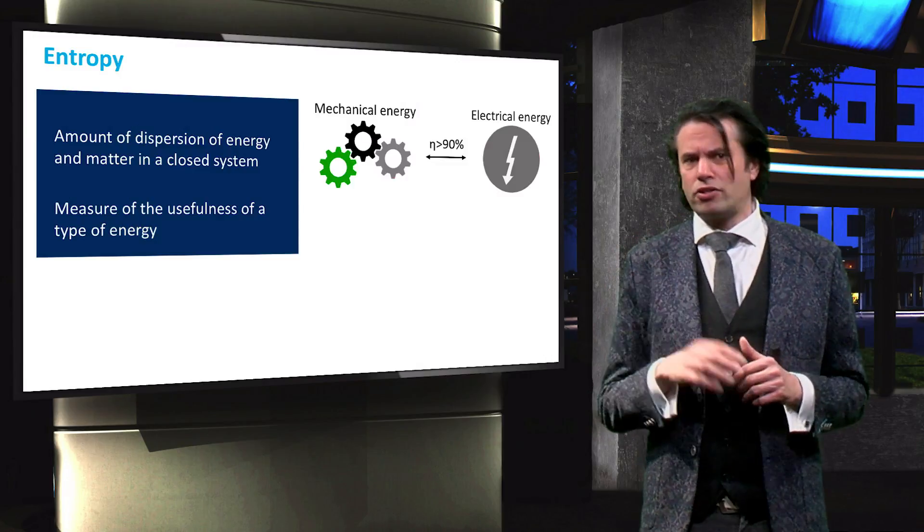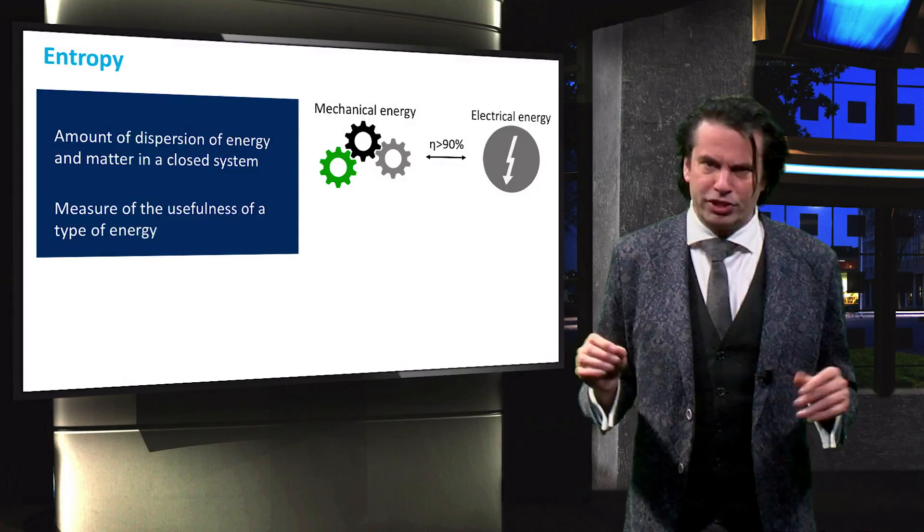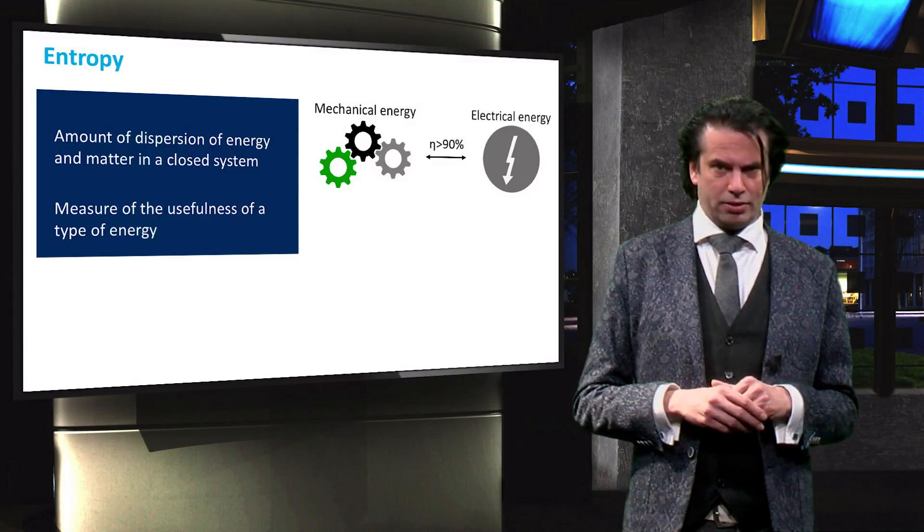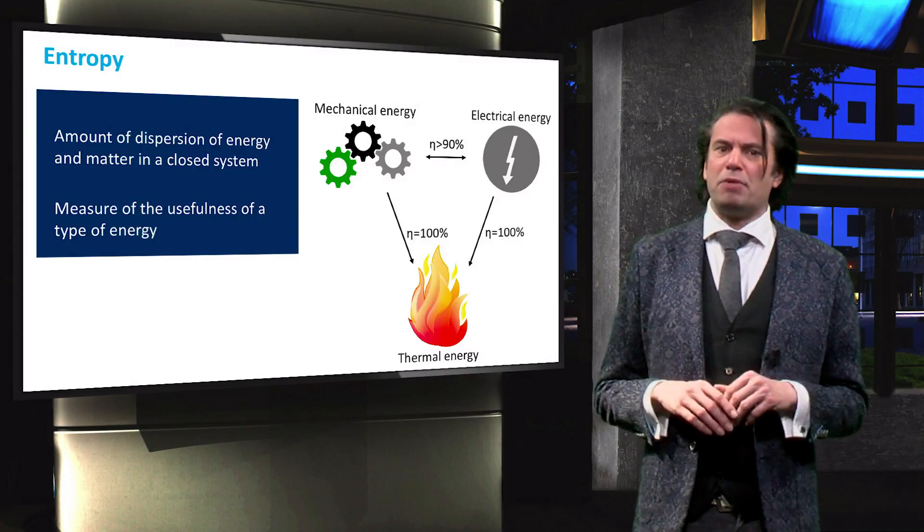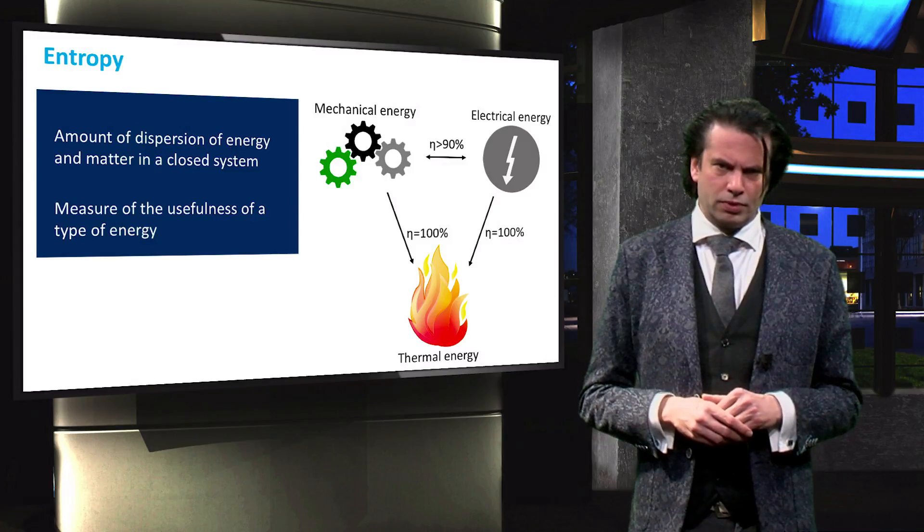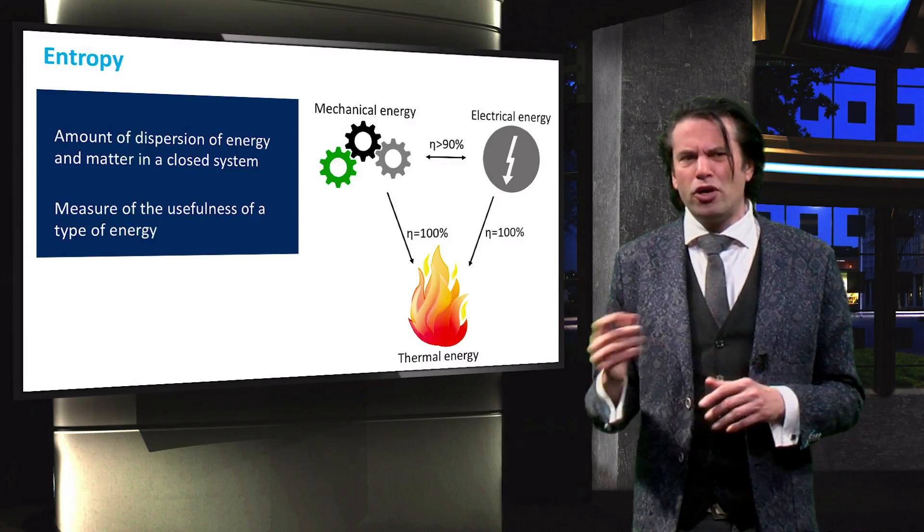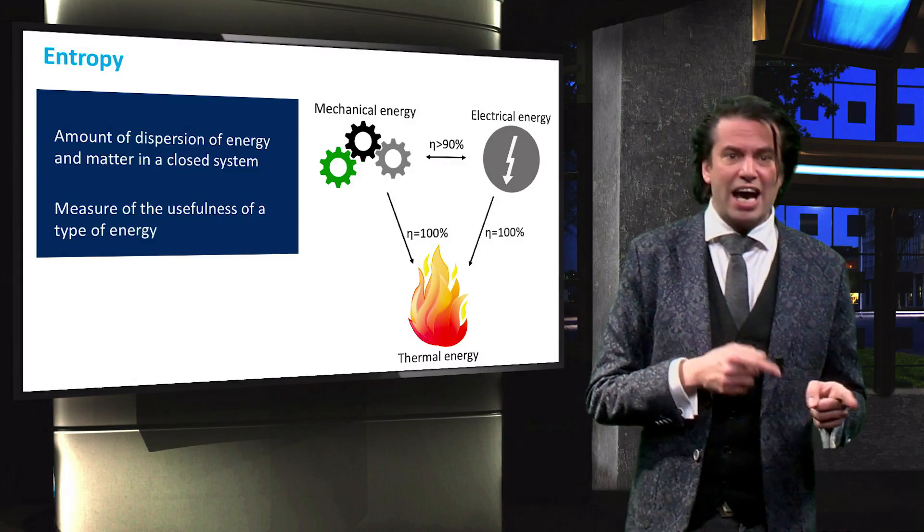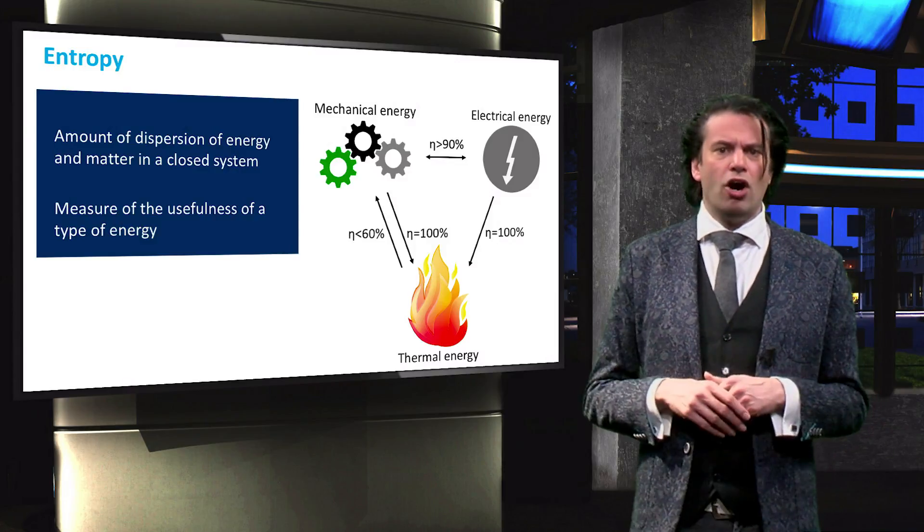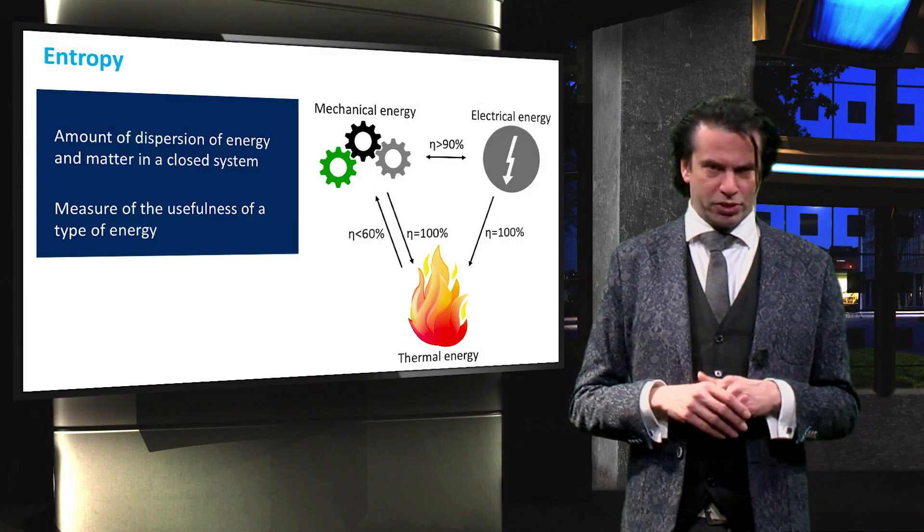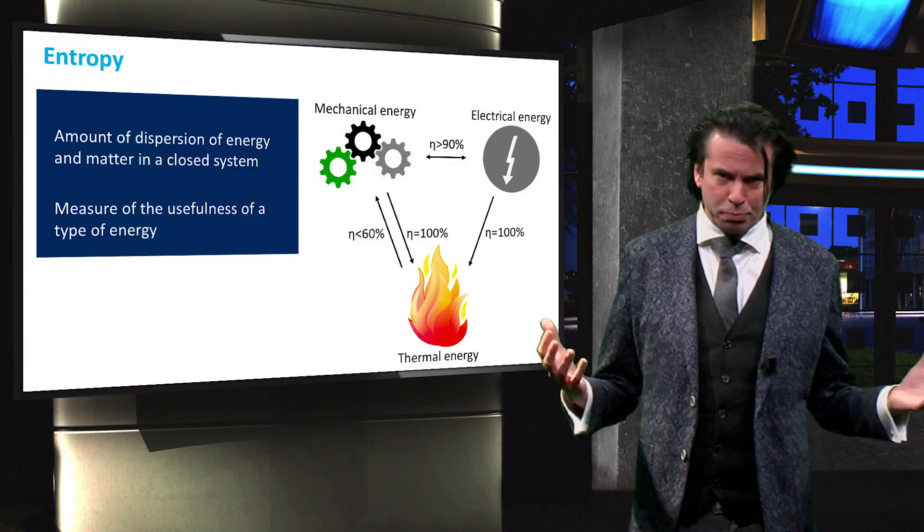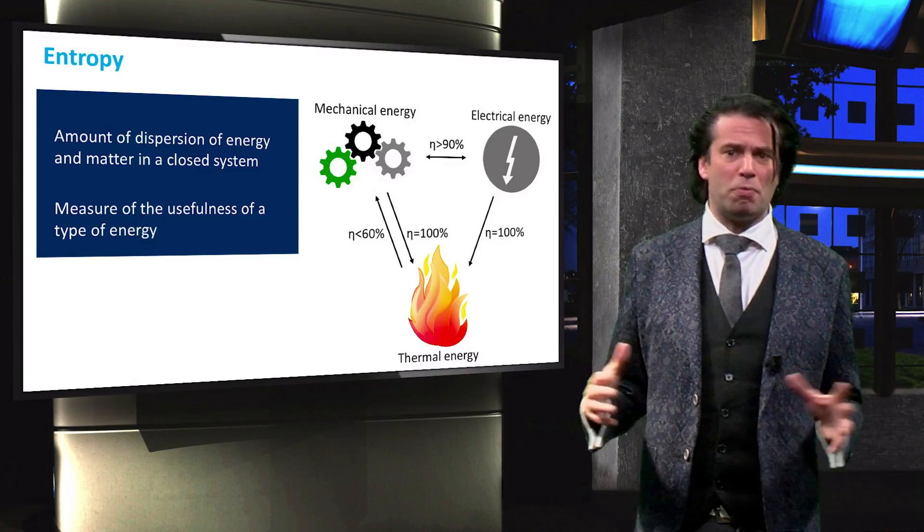Mechanical and electrical energy are very useful, since they can be converted into one another with an efficiency of over 90%. Both can be converted into thermal without any loss. Thermal energy, however, cannot be converted into electrical energy directly, and its conversion into mechanical energy occurs at an efficiency of under 60%. Thermal energy is the most distributed and least useful form of energy.